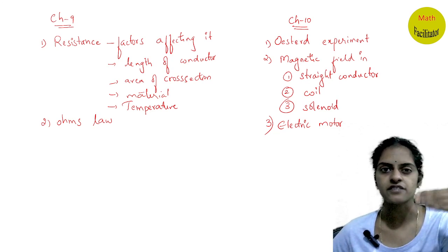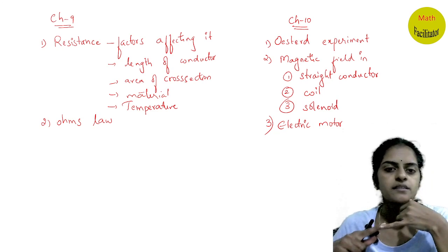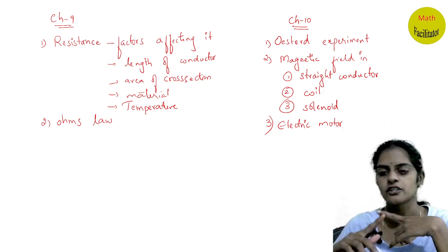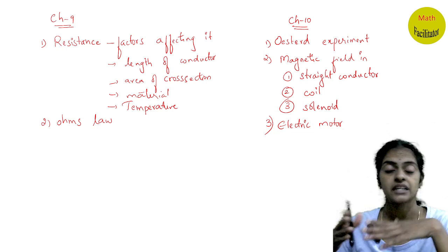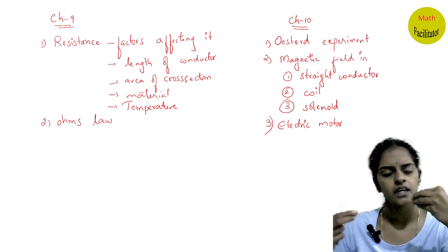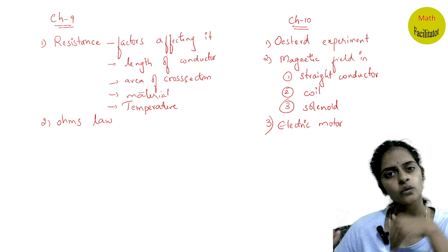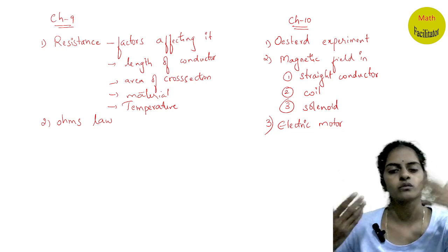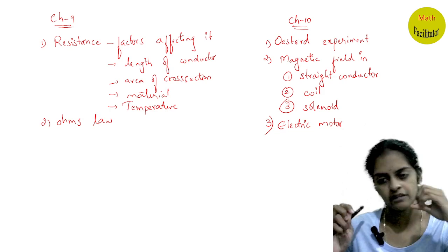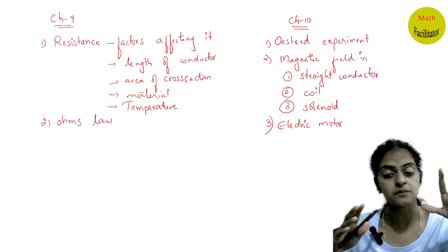Resistance depends on various factors. In your textbook, you have activities. Resistance depends on length of the conductor, area of cross-section, material of the conductor, temperature of the conductor. So do learn those activities. They are very small, very simple. You just have to see resistance is directly proportional to length of the conductor. So that way you have four activities. Please learn them from the textbook. So this is the most important topic which you have to learn from chapter number nine.